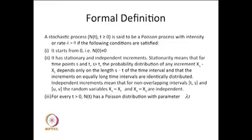For t > 0, N(t) has a Poisson distributed random variable with the parameter λt. And the differences of the random variables defined over non-overlapping intervals are independent.